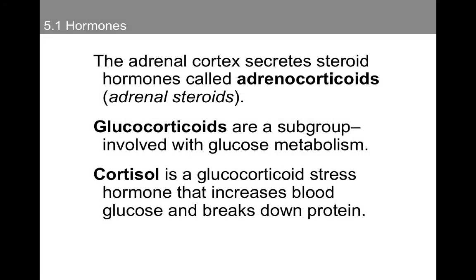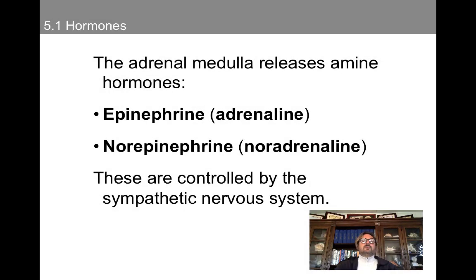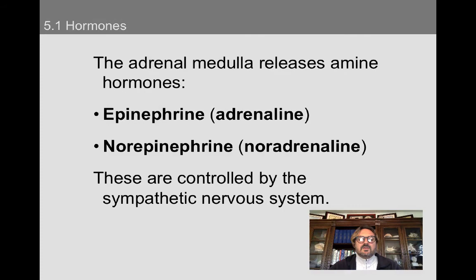The adrenal cortex secretes steroid hormones called adrenocorticoids. We have the glucocorticoids, which are involved in glucose metabolism. We also have cortisol, which is a glucocorticoid stress hormone that increases blood glucose and breaks down protein. The adrenal medulla releases amine hormones — these are going to be epinephrine, also called adrenaline, and norepinephrine, also called noradrenaline. These are controlled by the sympathetic nervous system — they're sort of the drive train of the sympathetic nervous system.